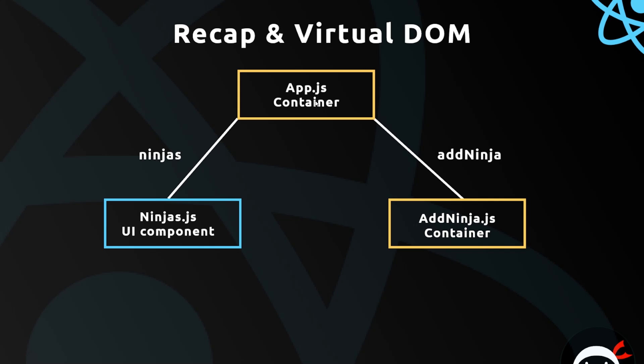In here we define a state with a ninjas property, which is an array of ninjas. That array of ninjas is passed down as a prop into this component right here — ninjas.js — and this is a UI component. The job of this UI component is to cycle through these ninjas, which are passed down as a prop, and output them to the DOM with a bit of template for each individual ninja.